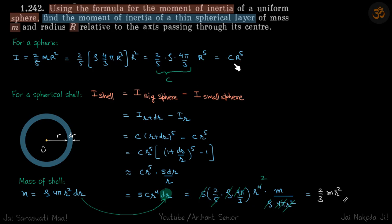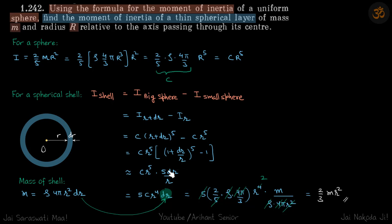For a spherical shell of width dr, I of shell equals I of big sphere minus I of smaller sphere. So I of big sphere will be I of a sphere of radius r plus dr minus I of a sphere of radius r. That becomes c times (r + dr)^5 minus c times r^5. Using the approximation, this yields 5c r to the power 4 times dr.